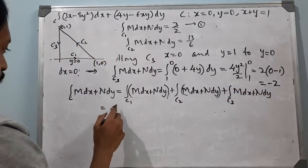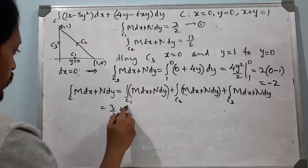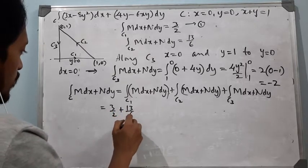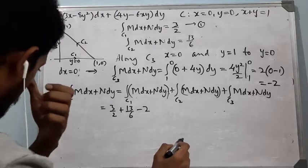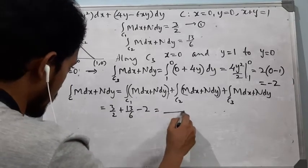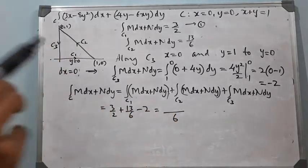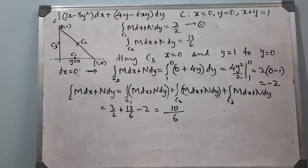So the total integral along C of M dx + N dy equals the integral along C1 plus C2 plus C3, which is 3/2 + 13/6 − 2. With 6 as the LCM, this gives 9/6 + 13/6 − 12/6 = 10/6 = 5/3.